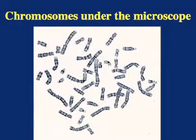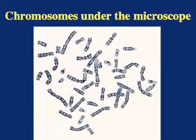The chromosome analysis performed most commonly in clinical laboratories looks at chromosomes under a light microscope. This picture shows how the chromosomes from a white blood cell look when they've been treated with a special stain that makes them appear to have black and white bands.